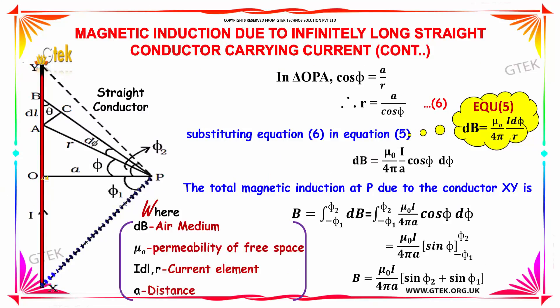In triangle OPA, cos psi equals adjacent side by hypotenuse. This is our adjacent side and this is our hypotenuse. So a by r, and r equals a by cos phi. Substituting the equation in equation 5, you got mu0 by 4pi, replacing r with a by cos phi.